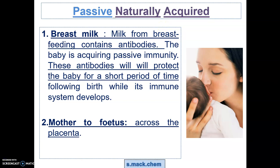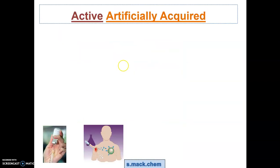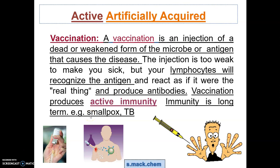Now let's look at active artificial immunity. Active artificially acquired immunity is in the form of a vaccination, where a vaccination contains a dead or weakened form of a pathogen — a microorganism — and as such, a vaccination would contain antigens.